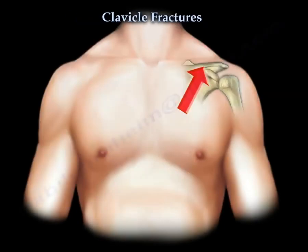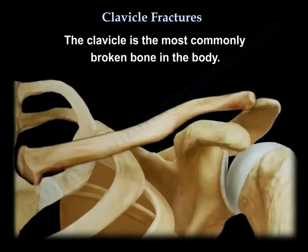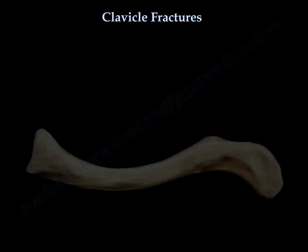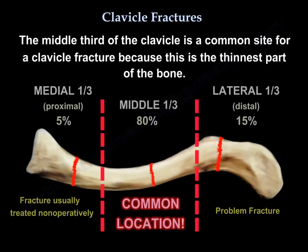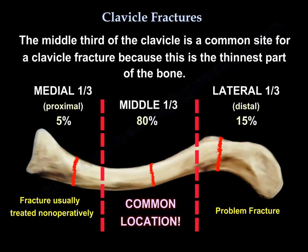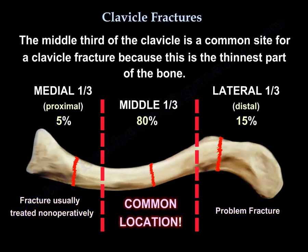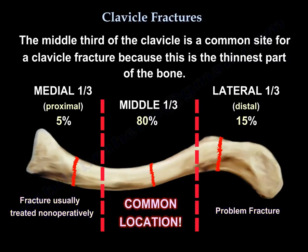Clavicle fractures. The clavicle is the most commonly broken bone in the body. The middle third of the clavicle is a common site for a clavicle fracture because it is the thinnest part of the bone. Fracture of the medial third is about 5%, and is usually treated non-operatively. The middle third is the most common location, and the lateral third is about 15%, which is considered a problem fracture.